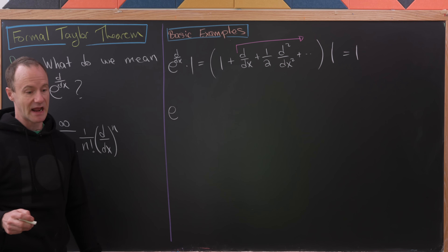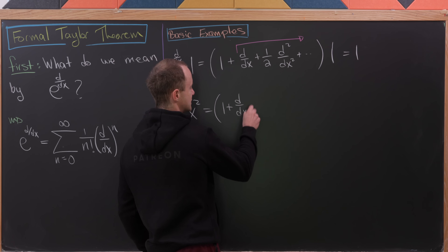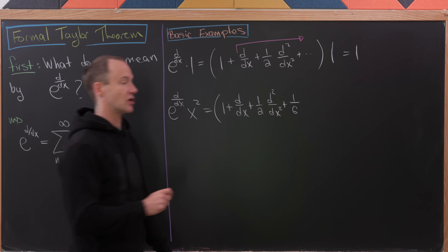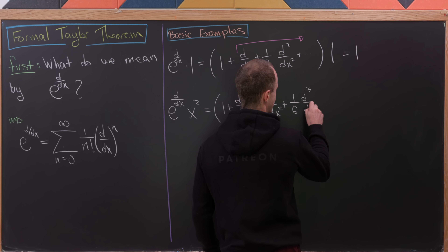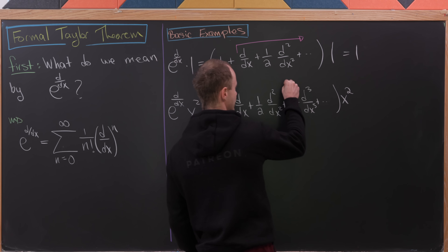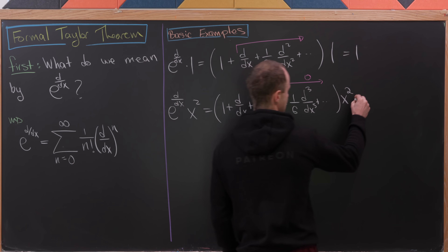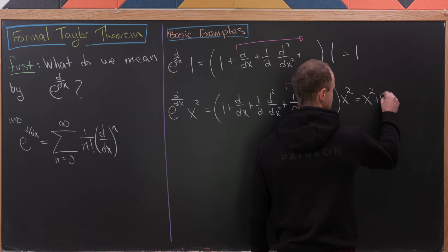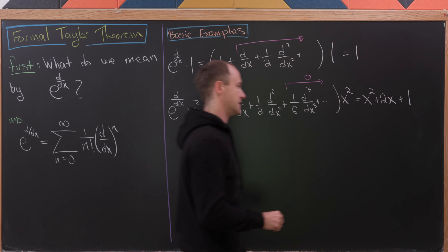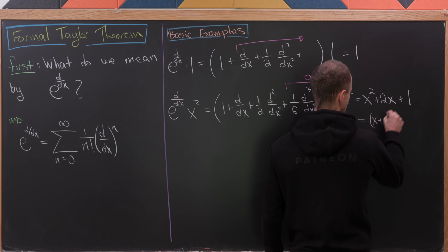Let's evaluate this at x squared. Writing out the first terms: 1 plus d/dx plus half the second derivative plus 1/6 times the third derivative, applied to x squared. The third derivative and higher evaluate to 0, so we only need those first three terms. Multiplying by 1 gives x squared; taking the derivative gives 2x; taking the second derivative gives 2, multiplied by 1/2 gives 1. So we get x squared plus 2x plus 1, which factors as (x+1) squared.